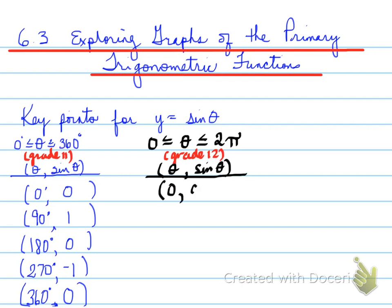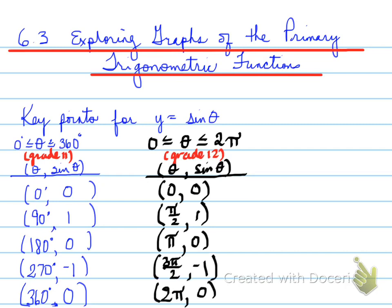Now we need to take these five coordinates and convert them to radian measure. 90, 1 will become π/2 and 1. 180, 0 will become π, 0. 270 and -1 will become 3π/2 and -1. And then 360 will become 2π and 0.